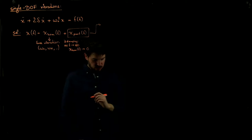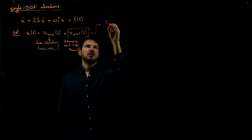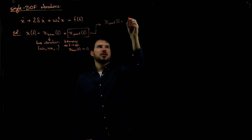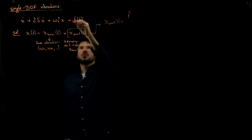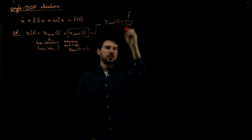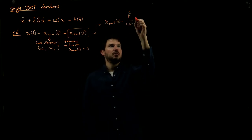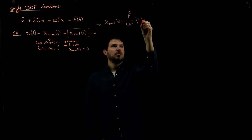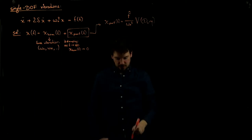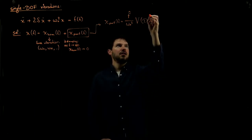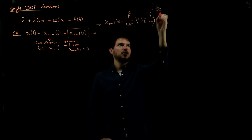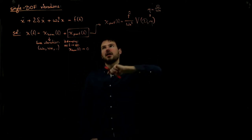We showed that the general particular solution can be written as follows. x particular of t is given by the amplitude of the forcing f-hat — where the excitation is f-hat times cosine or sine of capital Omega t — divided by the eigenfrequency squared of the system, times a magnification factor V, which depends on the dimensionless damping ratio capital D and on eta, where eta is defined as the forcing frequency divided by the eigenfrequency.